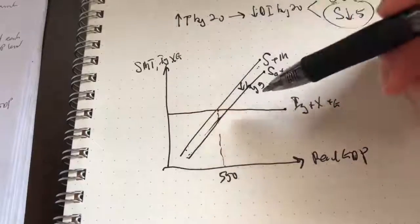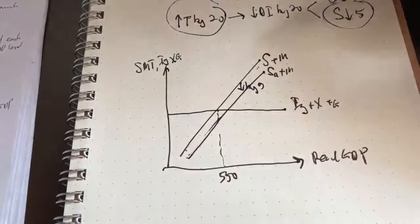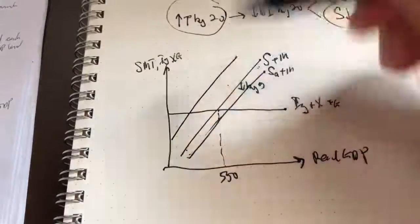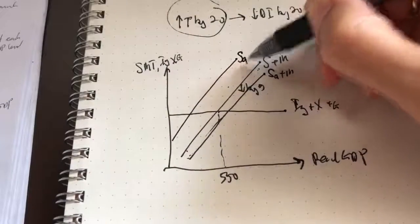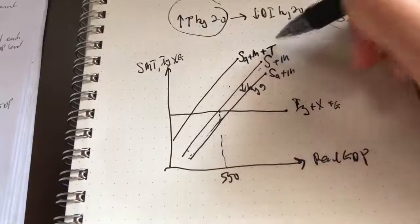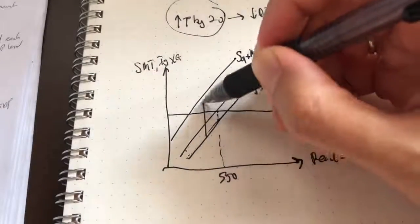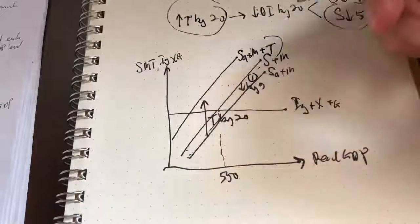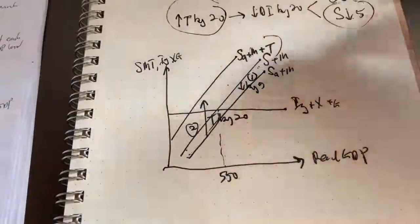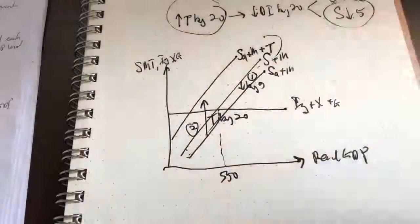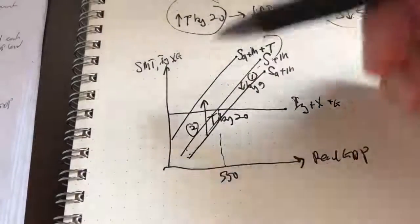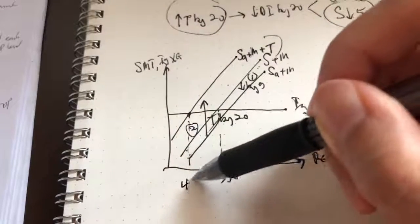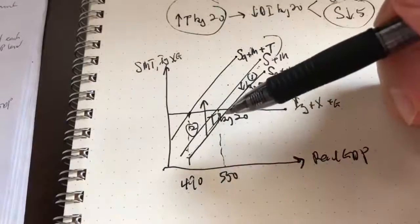We don't achieve equilibrium yet because we must also show the change in taxation. The change in taxation is 20. So here is savings after tax plus M, and we also have to show the change in T. This represents an increase in tax by 20 — these are the changes that happen simultaneously. So this is our final equilibrium, which is 490 — the same figure as what you saw in the Keynesian cross.